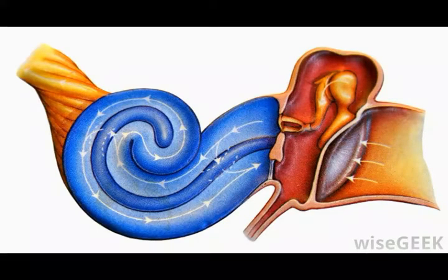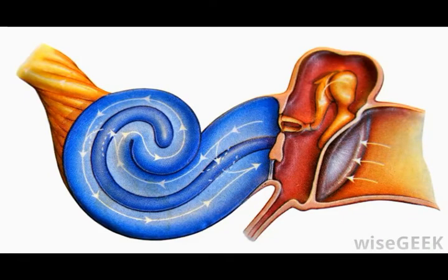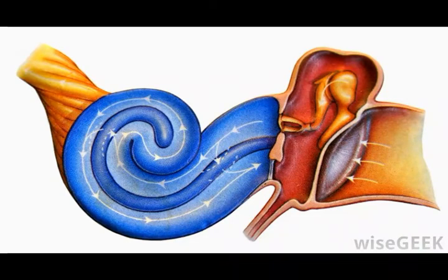The stapes is first seen in a human embryo between the sixth and eighth weeks of life. During this time, it surrounds the stapedial artery, which is providing most of the vasculature of the embryonic head.